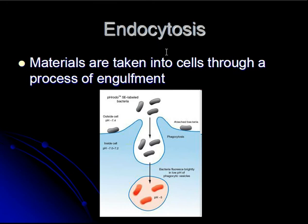This slide shows the process of endocytosis. This process moves materials into cells through a process of engulfment. Here we're seeing a picture of a macrophage cell, which is part of the immune system. We can see that the cell membrane is actually going to move around and engulf bacterial cells, moving those into vesicles where the bacterial cells can later be broken down. Students should remember watching the in-class video of the amoeba cell, which fed by this same process.